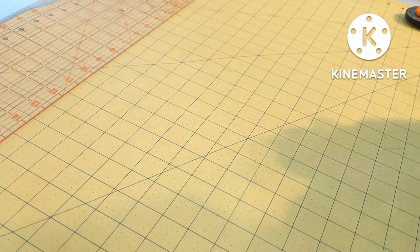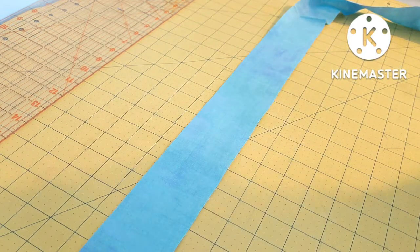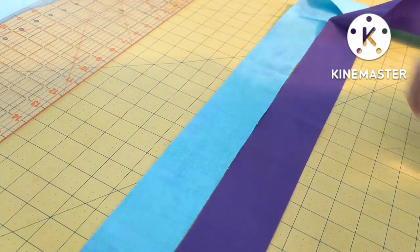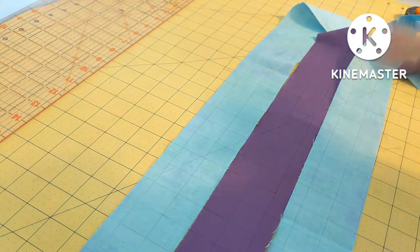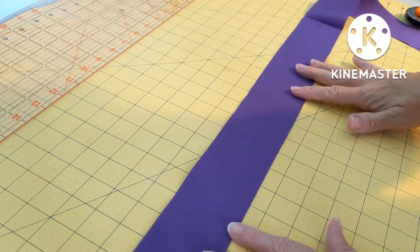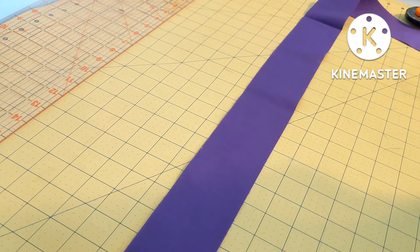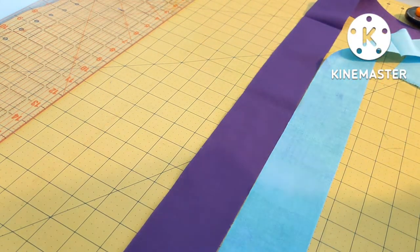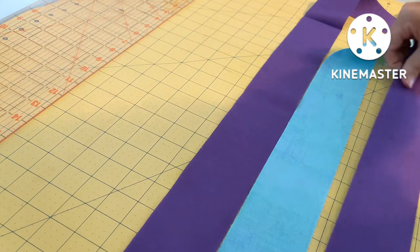For our first block we are going to be sewing together strip sets. Our first strip set that we are going to sew will be our outside corners. So I am going to sew the blue and then the purple and then the blue. The second strip set that you sew together is your inner row. So that is going to be the purple and then the blue and then the purple.